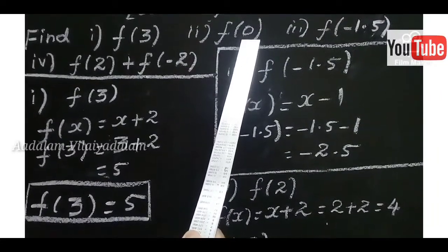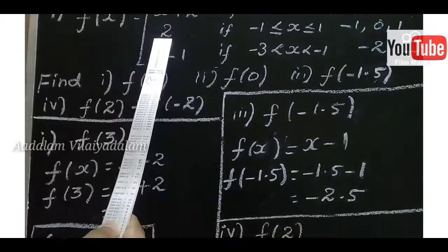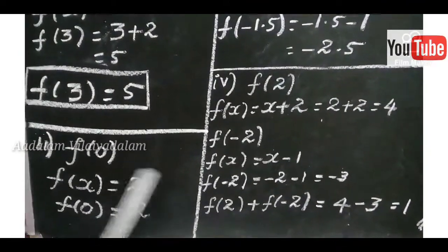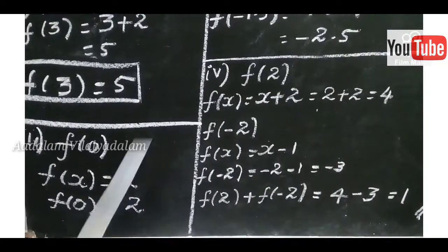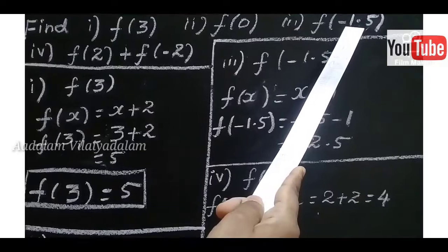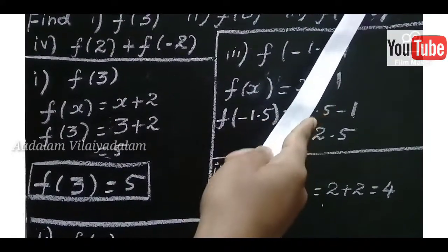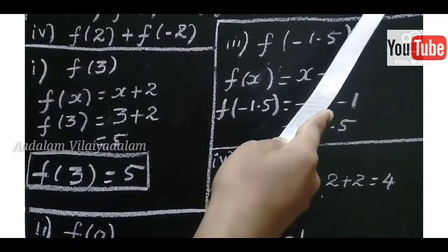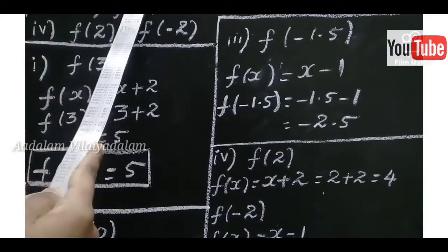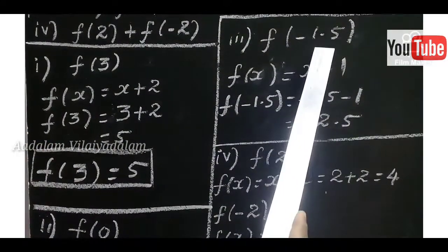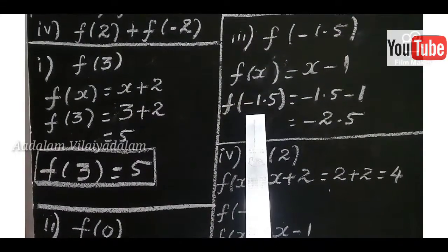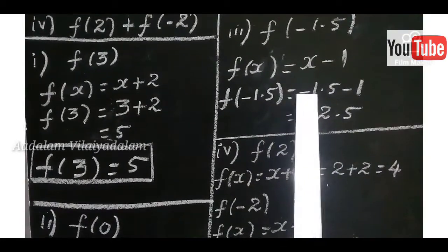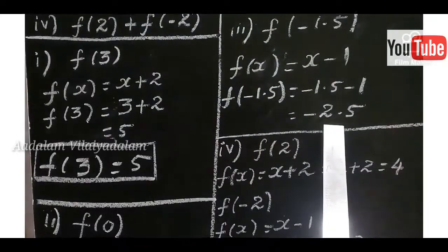Second: find F of 0. Here 0 falls in the second function, where the corresponding function is F of X equals 2, a constant. Substituting X equals 0, there is no variable — only a constant — so F of 0 equals 2. Third: F of minus 1.5. Minus 1.5 falls in the third function (minus 3 < X < minus 1). The corresponding function is F of X equals X minus 1. Substituting X equals minus 1.5: F of minus 1.5 equals minus 1.5 minus 1, which is minus 2.5.